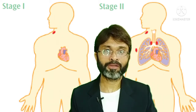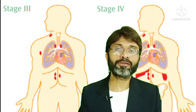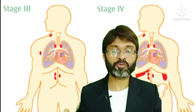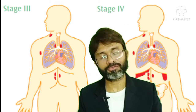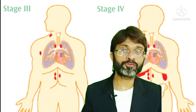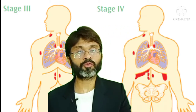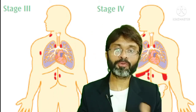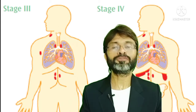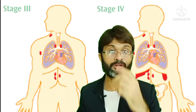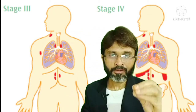In stage 3, abnormal cell accumulation occurs on both sides of the diaphragm in the lymph nodes. In stage 4, there is abnormal growth of lymphoid tissue spreading throughout the body and into other tissues. At this last stage, if there is a problem with treatment, the prognosis rate is poor.